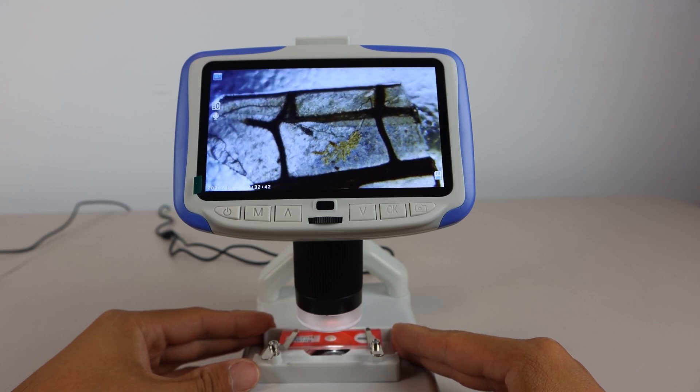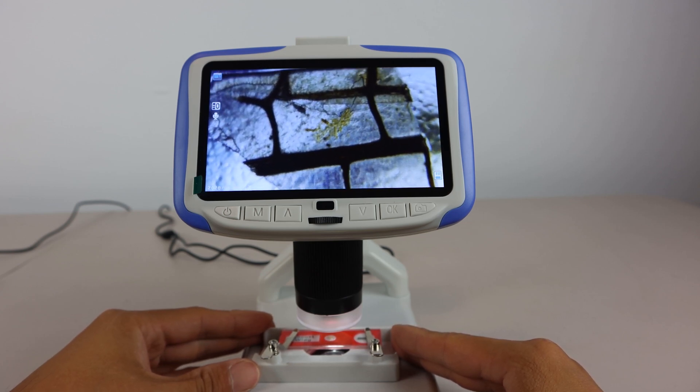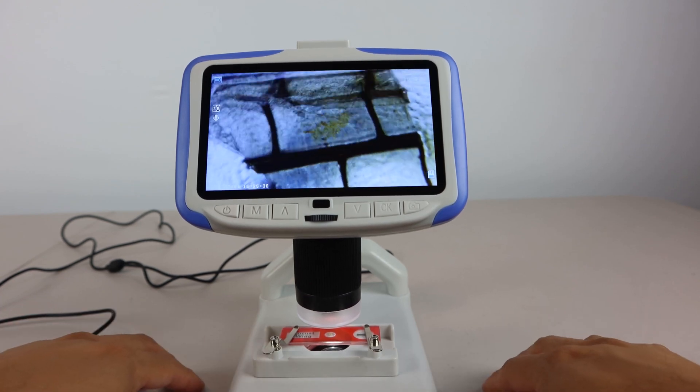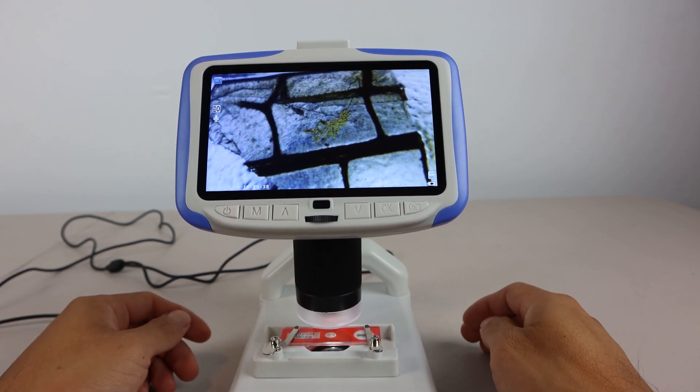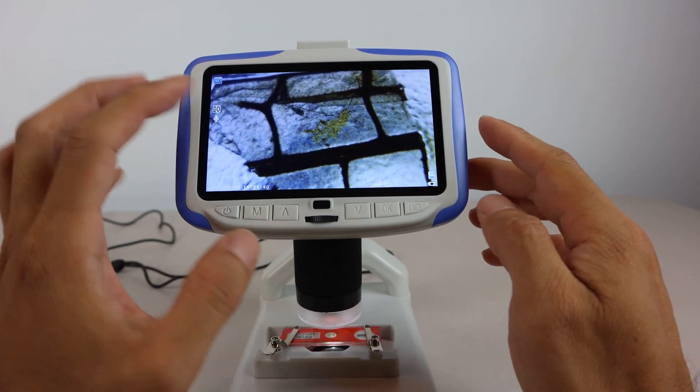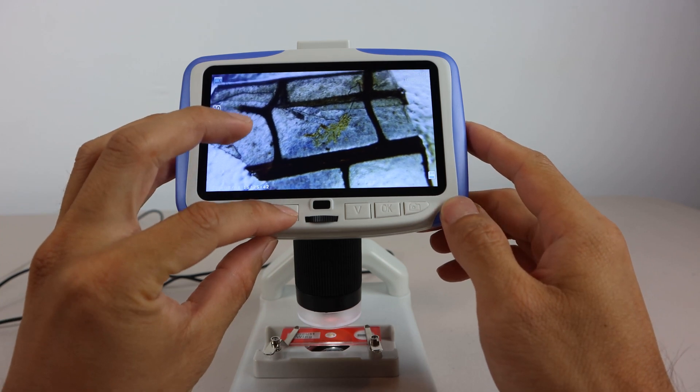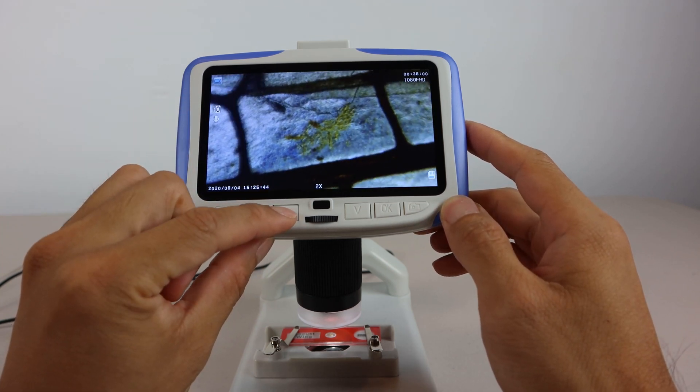The microscope is quite sensitive to table vibrations. When I tap the table, the image will shake around for a bit before stabilizing. This is also true if you touch the LCD, for example, to zoom in or out using the physical controls.